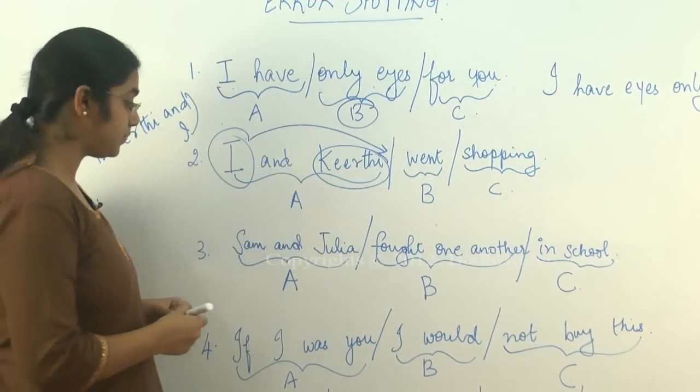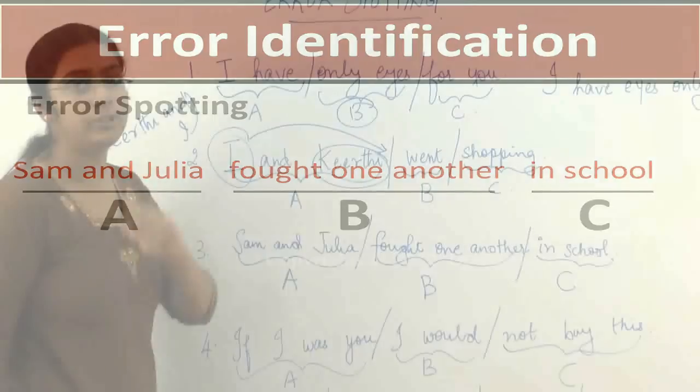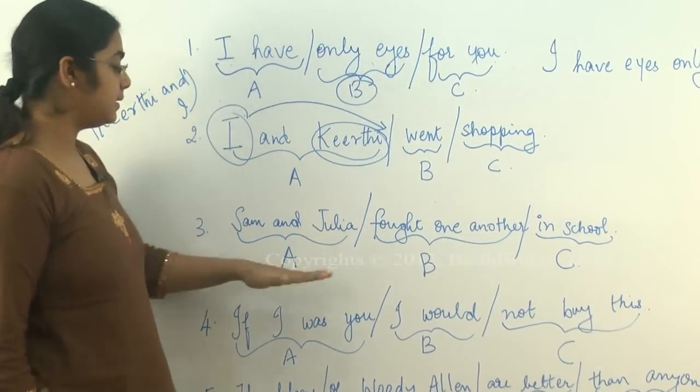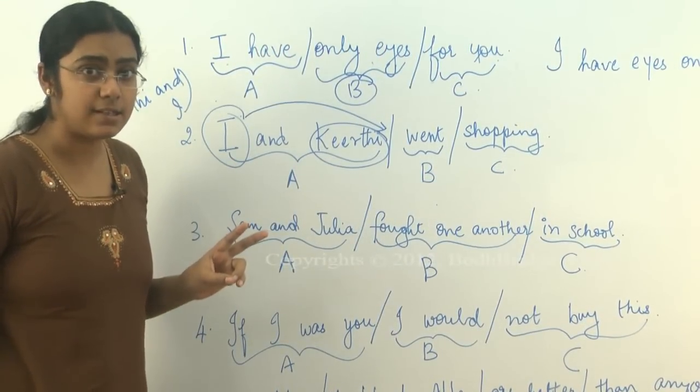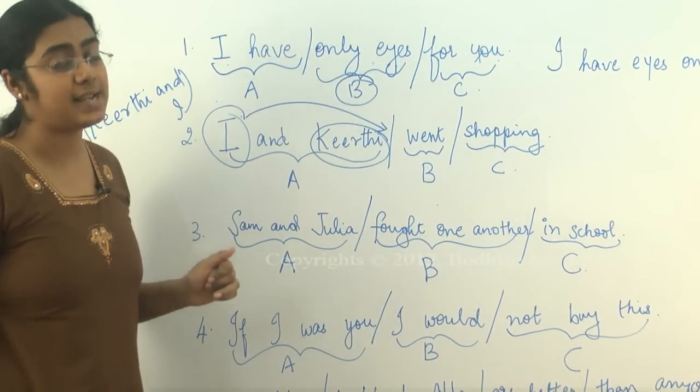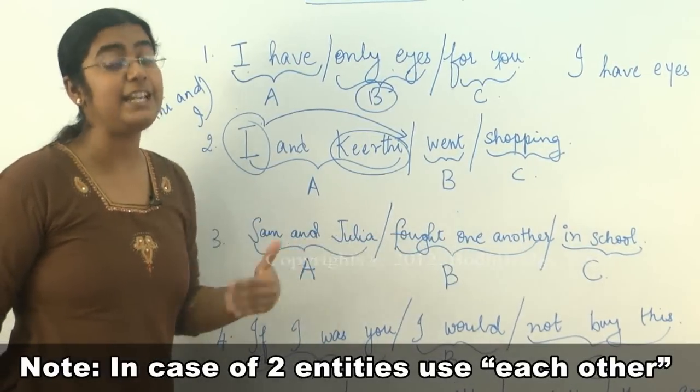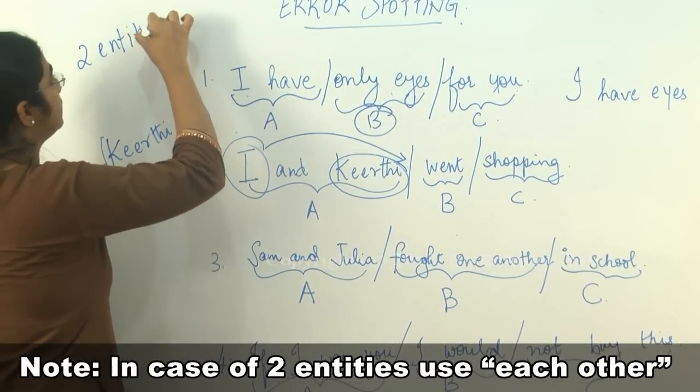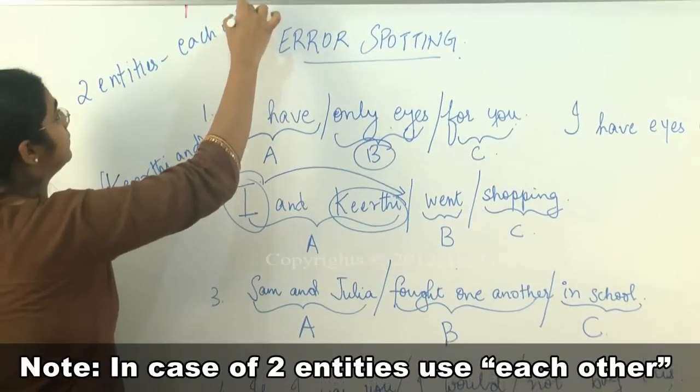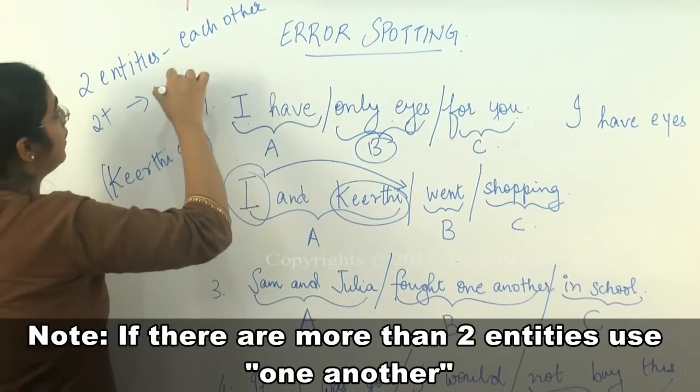Now, question number 3. Sam and Julia fought one another in school. Is there a problem? Let's see. Sam and Julia, A, there is no problem. Fought one another in school. Sam and Julia, they are two entities and the rule states that if you have only two entities, it's not one another but each other. So, two entities, it's each other. Two plus, that's one another.